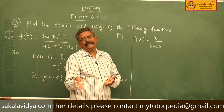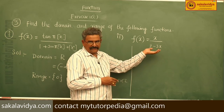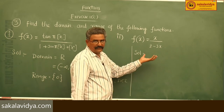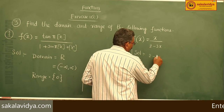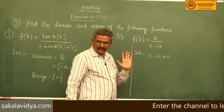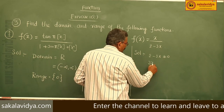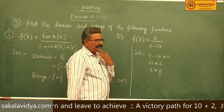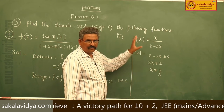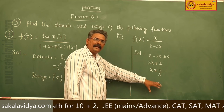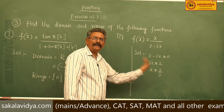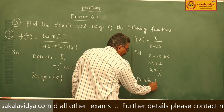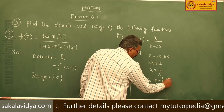So x = 2/3 must be deleted from the real number system. To define the domain, we need 2 − 3x ≠ 0, which means x ≠ 2/3. Therefore, the domain is equal to ℝ minus {2/3}.